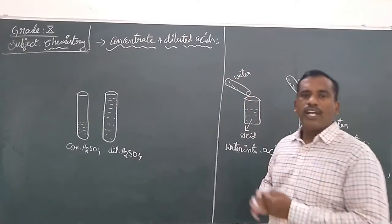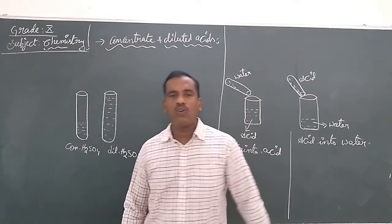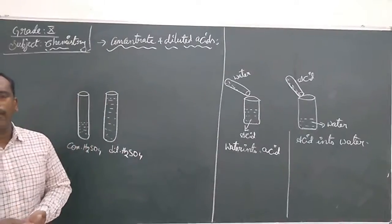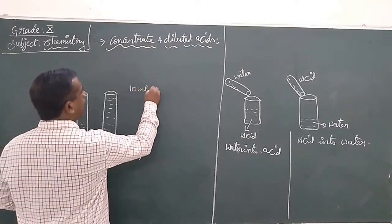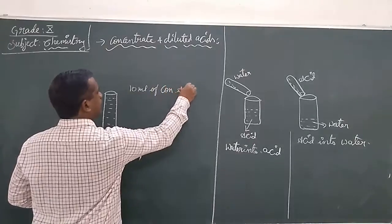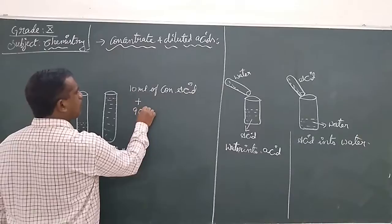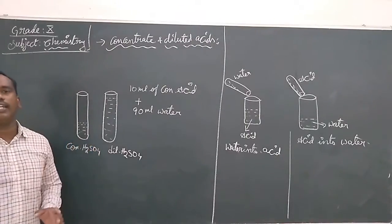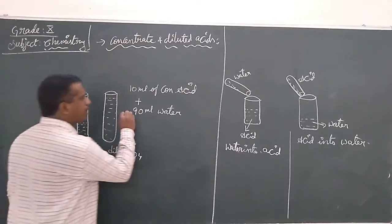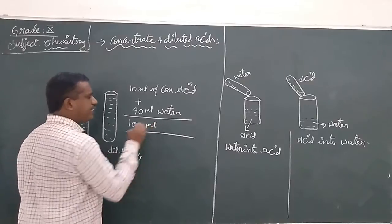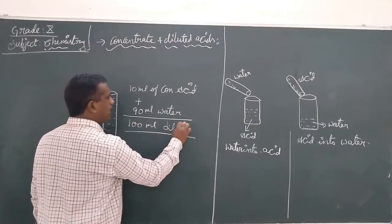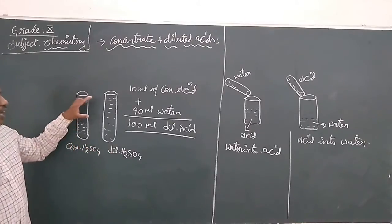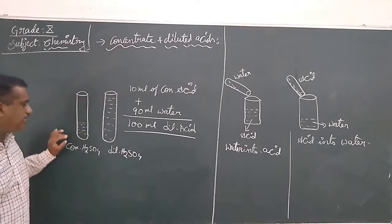The same concept applies here. Concentrated acids have more number of hydrogen ions — they are more acidic. For a dilute acid, we take 10 ml of concentrated acid and add 90 ml of water. The total final solution is 100 ml — we call this the dilute acid. In dilute acid, the water percentage is more than the acidic percentage.